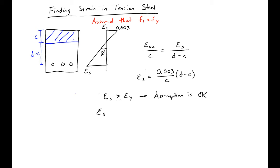If not, then what we'll need to do is recalculate C with our actual steel stress. We can plug in our steel stress equal to our modulus of the steel times our strain in the steel, which will be 0.003 times ES times d minus C over C.